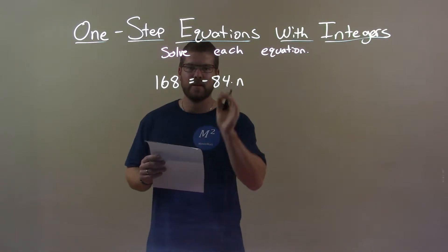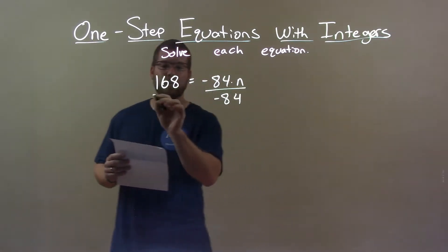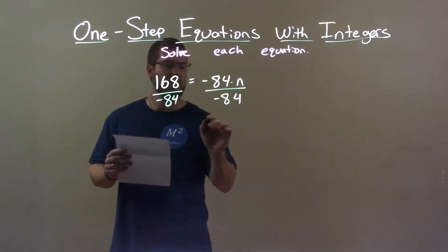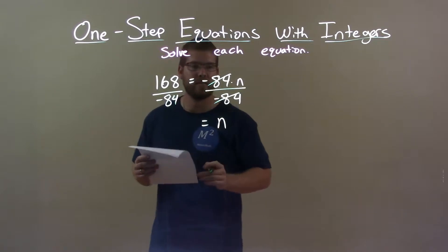Opposite multiplication is division, so I'm going to divide both sides by 84 or negative 84. This will get me, well, negative 84's cancel, n by itself on the right.